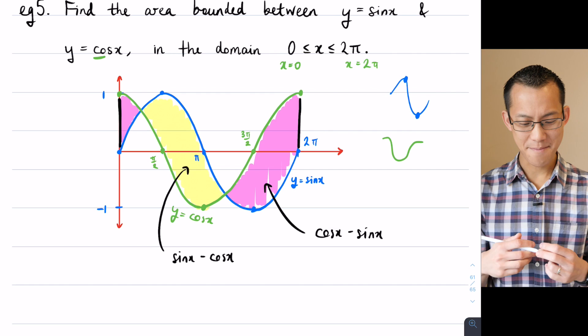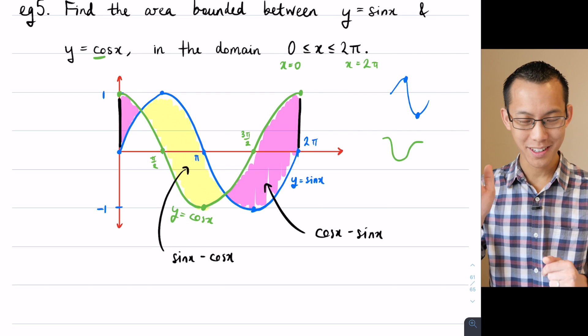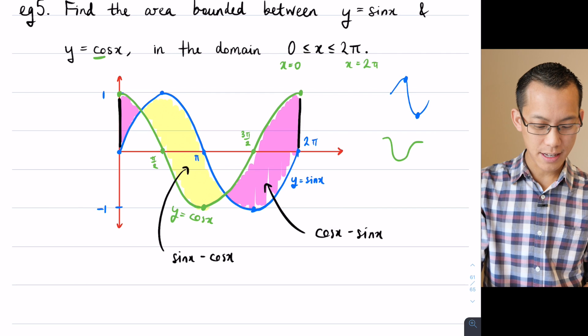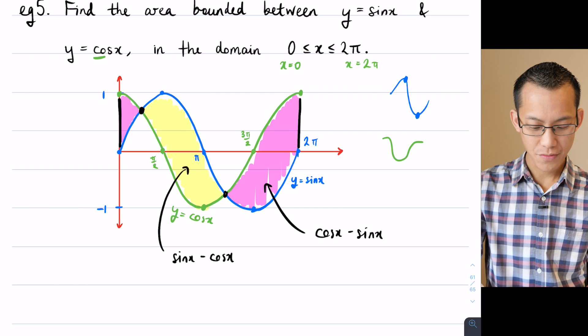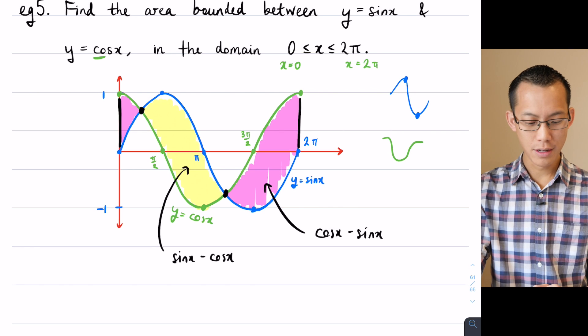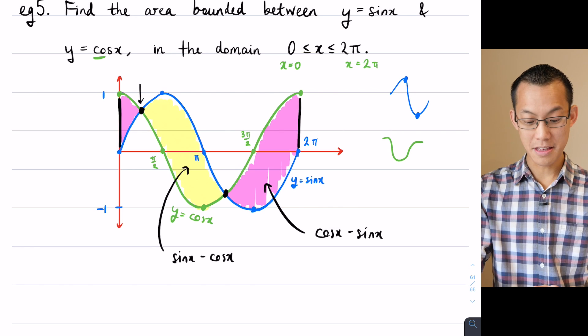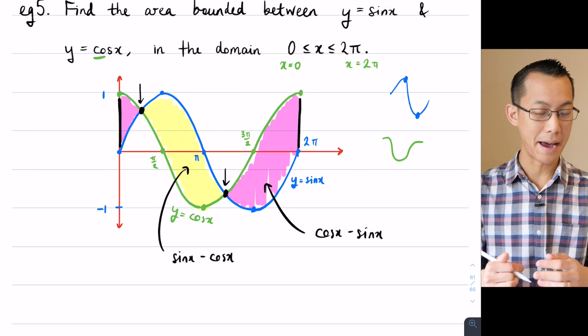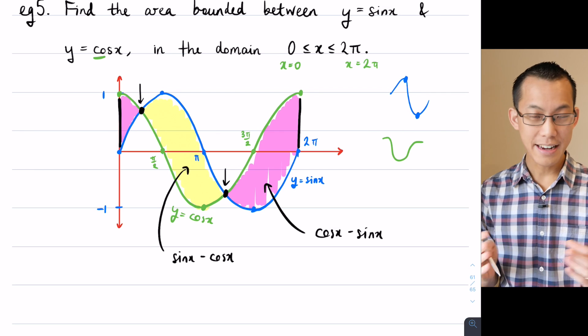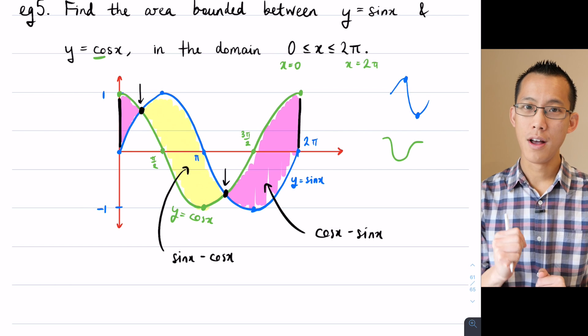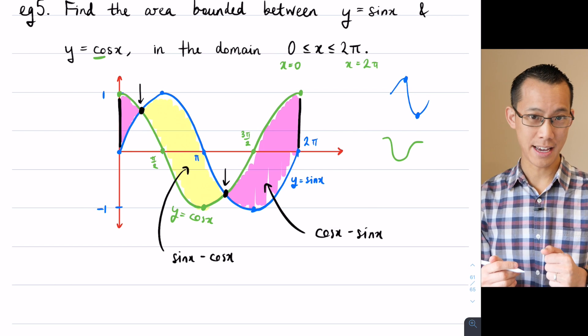Now my pink areas they start at x equals 0 and they end at x equals 2π, that's nice, but then I've got these two spots in here where the yellow integral takes over or the pink integral stops here, becomes yellow, then the yellow integral goes and then it stops and at that point it transitions back into being the pink integral. So I need to find out what these two spots are just like with the questions we've looked at before, I'm going to solve simultaneously to find points of intersection.